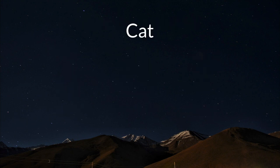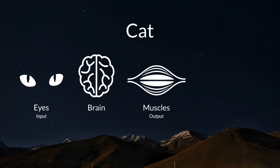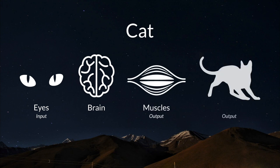I then showed them an example of a cat seeing a potential predator. Its eyes have sense receptors that receive the information. The brain processes that information and as a result helps the cat respond to what it sees. We then had a class discussion on the similarities and differences between the three examples I showed them.